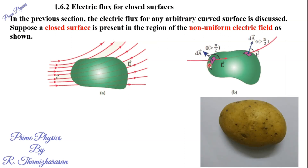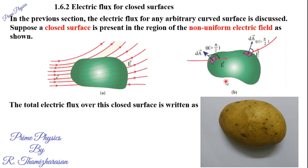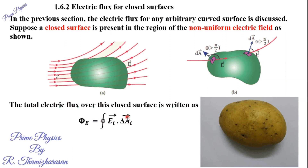Now we can calculate the flux through a closed surface. We will look at the formula for the total flux linked with the closed surface. The formula is: total flux φ = closed surface integral of E_i vector · dA_i vector. The circle on the integral sign indicates integration over the entire closed surface.